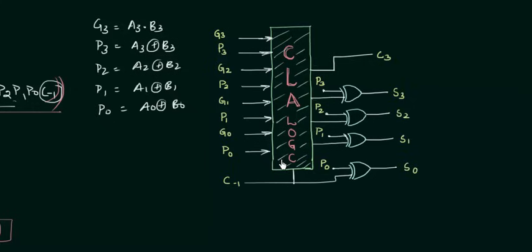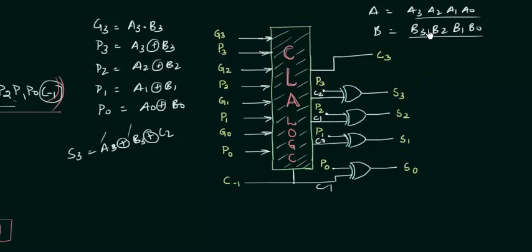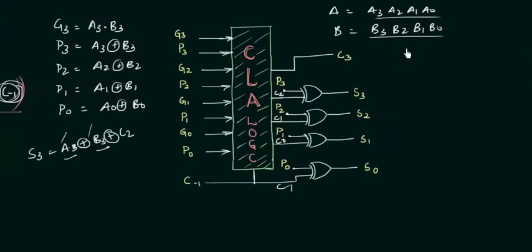In this circuit, Sum3 = A3 XOR B3 XOR C2. C2, C1, C0, C-1 are all visible in the circuit, and C3 is also shown. We can have Sum3 directly because A3 and B3 are already given. A is A3, A2, A1, A0 and B is B3, B2, B1, B0 — the two 4-bit numbers we want to add. So this information is already available to us.